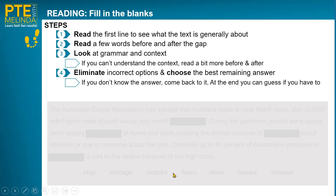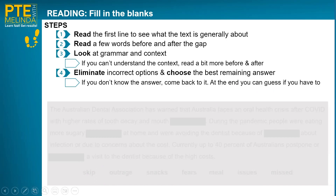Step four: eliminate any incorrect options. At the bottom you'll have six, seven, or eight words. Any words you know can't be correct, eliminate those, then choose the best remaining answer. You might have three or four possible words left — choose the best one. If you really don't know, come back to it later. Fill in the ones you can, and in doing that you're already eliminating some of those words. You might only have one or two words left, and even if you're guessing, you're guessing out of one or two, not out of seven.